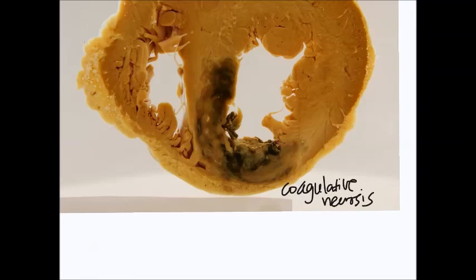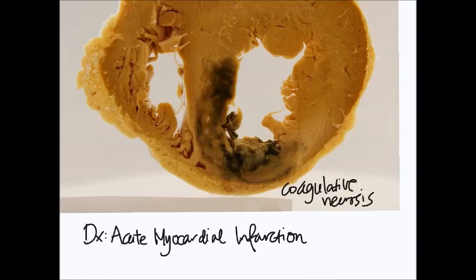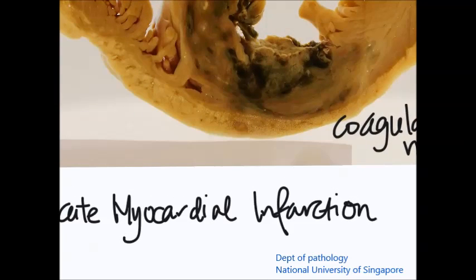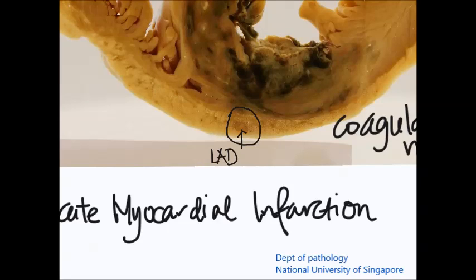The diagnosis in this case is acute myocardial infarction. Acute myocardial infarction is often due to thrombosis of the supplying coronary arteries. Looking very carefully and zooming in, we can appreciate here in the anterior pericardial fat a rounded structure — this is the left anterior descending artery, one of the coronary arteries that supplies the anterior myocardium as well as the interventricular septum. It is completely occluded, indicating thrombosis.